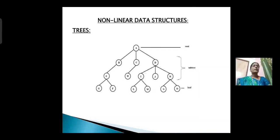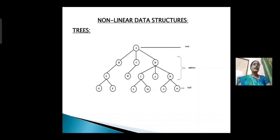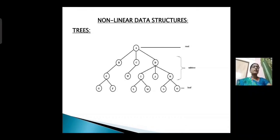First, tree. A tree is a non-linear data structure used to represent one-to-many relationships with data items. A tree is used to represent hierarchical relationships. If you look at this diagram, A is the root node and the remaining are sub-tree and leaf nodes. This is the tree diagram.